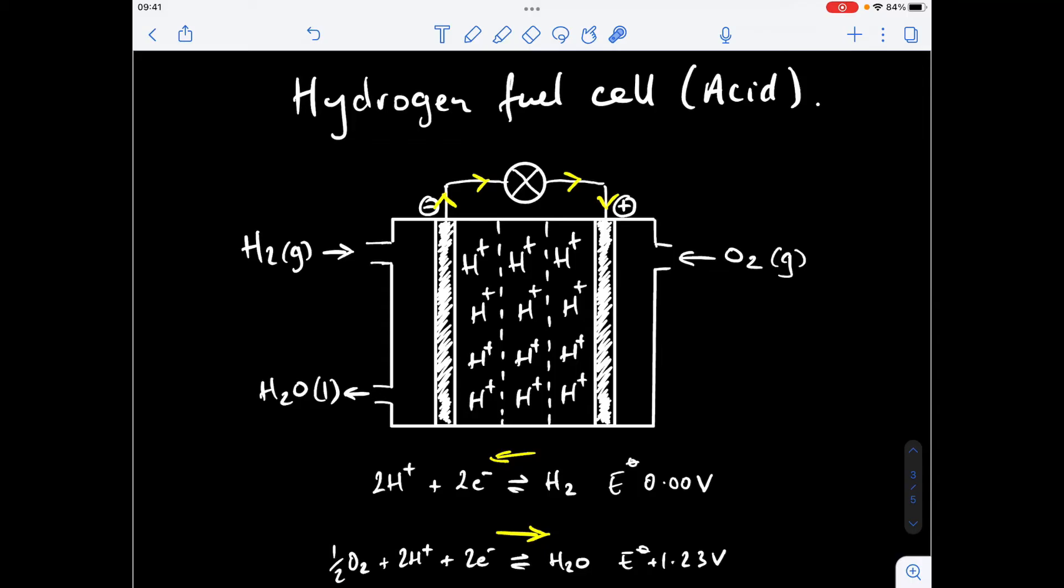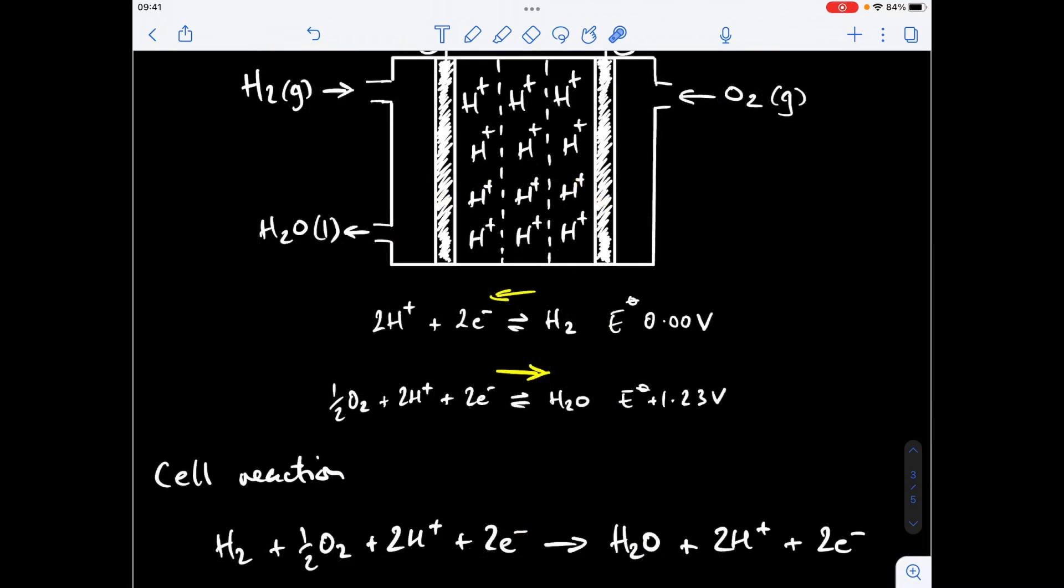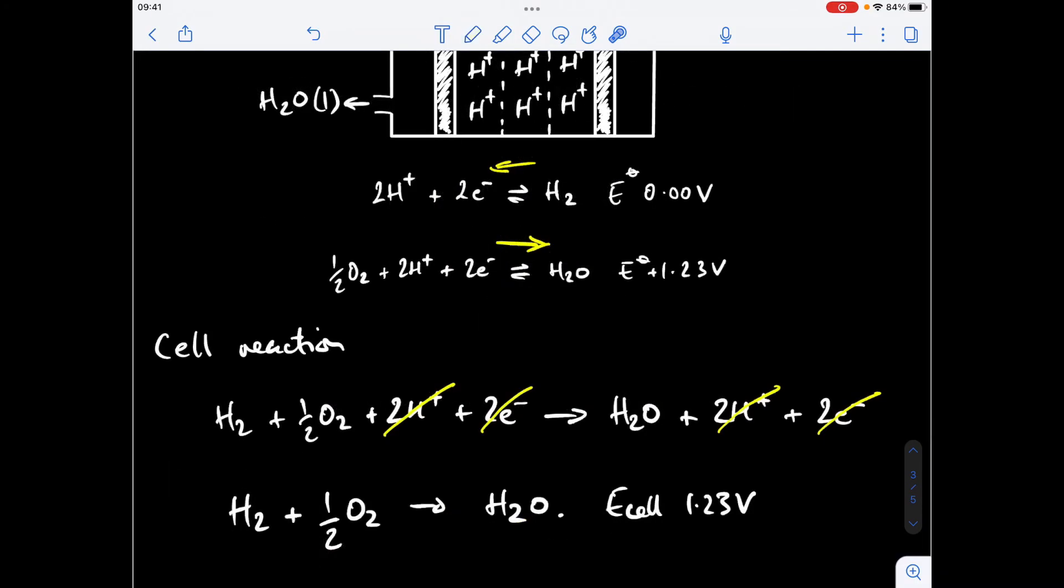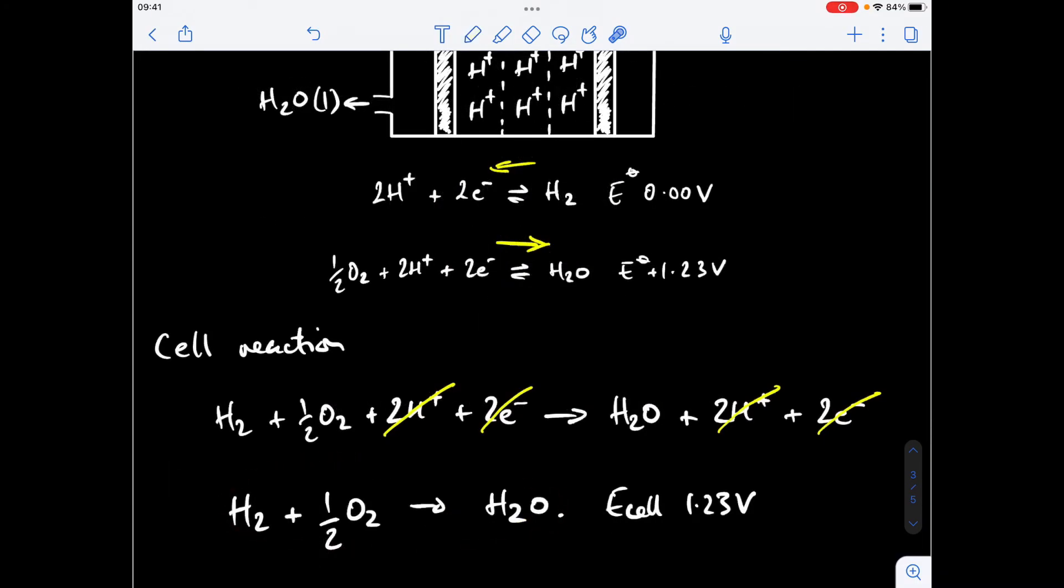Next we'll derive the overall equation for the cell and then we can work out the voltage of the cell. We're going to combine this half equation in this direction with this one in this direction. We can cancel down so we've got two H+ ions on each side, we've got two electrons on each side which leaves us with this as our overall reaction. You can see straight away the beauty about this reaction is the fact that the only waste product is water. In a combustion engine where you're burning fossil fuels or petrol diesel you're creating carbon dioxide, carbon monoxide, H2O and lots of other nasty things as well.